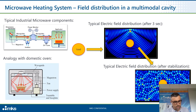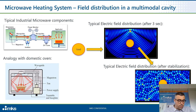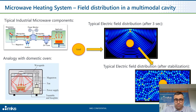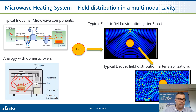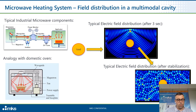Let's now take a look at a typical microwave heating system involving a multimodal cavity. The typical example of a multimodal cavity is a domestic oven. You can see the electrical field distribution after 3 seconds and after stabilization. The important thing in this case is that if you enter with a known frequency in a multimodal cavity, the intensity of the answer is proportional to the stimulation — in other words, the more you give, the more you get.